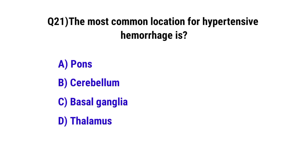Question No. 21: The most common location for hypertensive hemorrhage is — the correct option is C: basal ganglia.